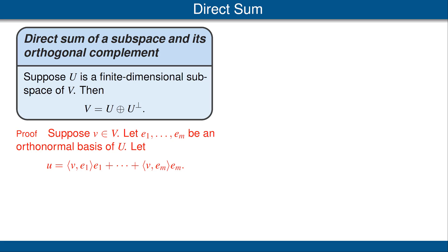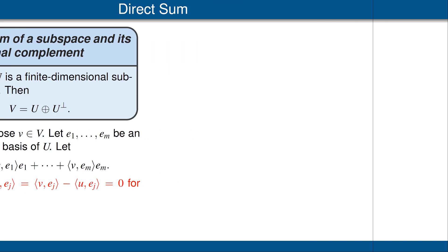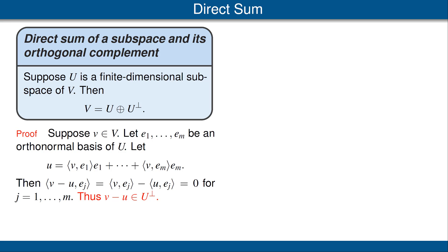To prove this, suppose V is an arbitrary vector in V. Let E1 up to Em be an orthonormal basis of our subspace U, and let the vector U be defined as shown here. Then V minus U, inner product with one of the Ejs, is equal by additivity to V inner product Ej, minus U inner product Ej. If you look at the formula above for U, you'll see that U inner product Ej is equal to V inner product Ej, so we get zero. This is true for each J from 1 up to M, and E1 up to Em span U. Because V minus U is orthogonal to each of the Ejs, V minus U is orthogonal to everything in the span of the Ejs — in other words, the vector V minus U is in the orthogonal complement of the subspace U.